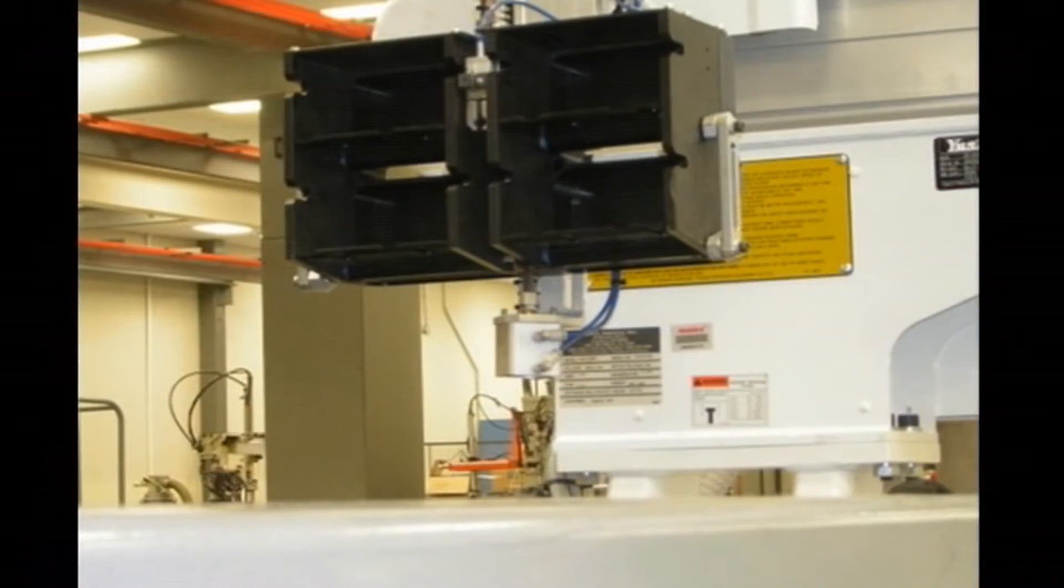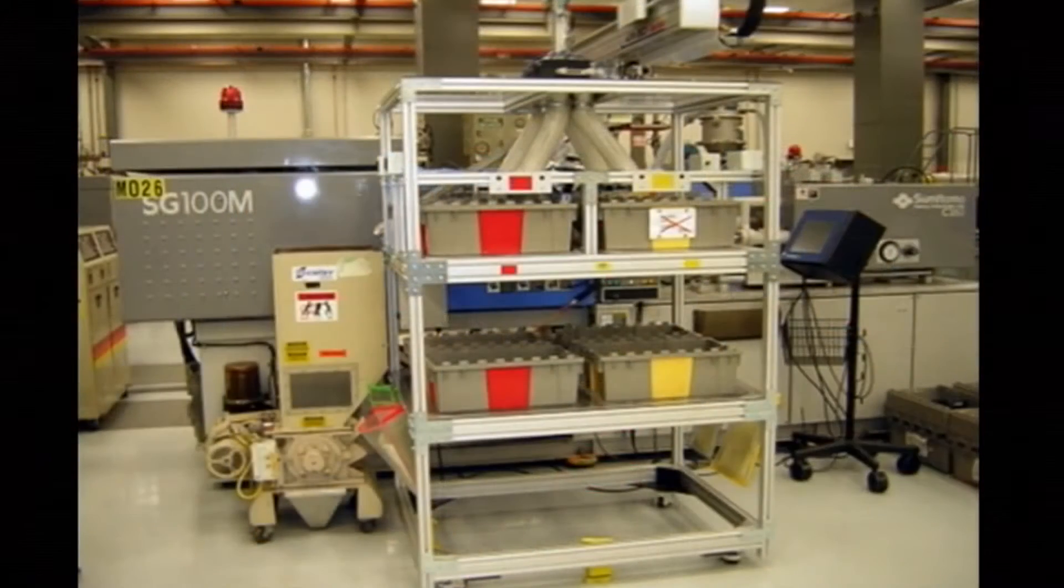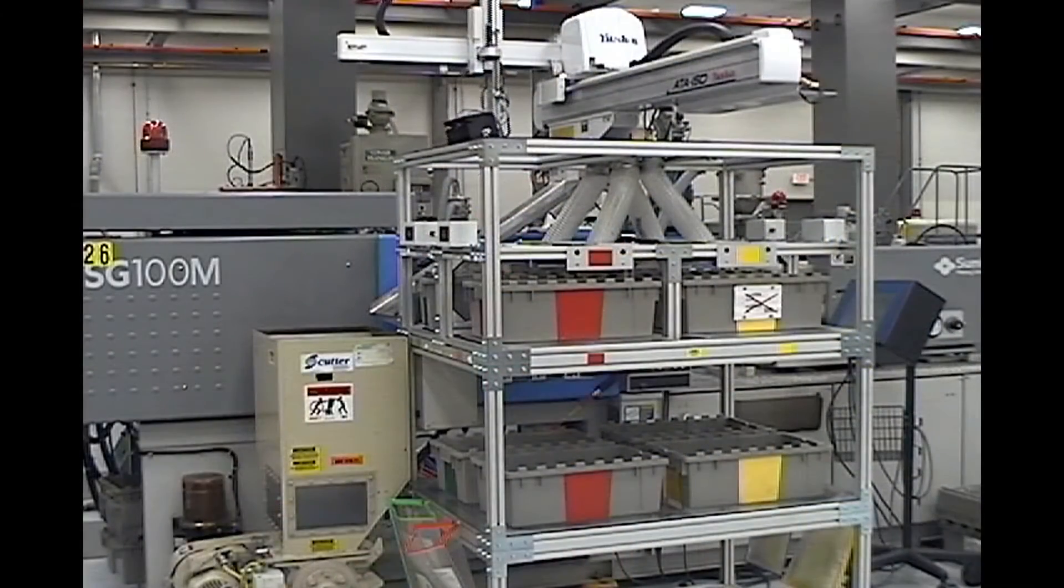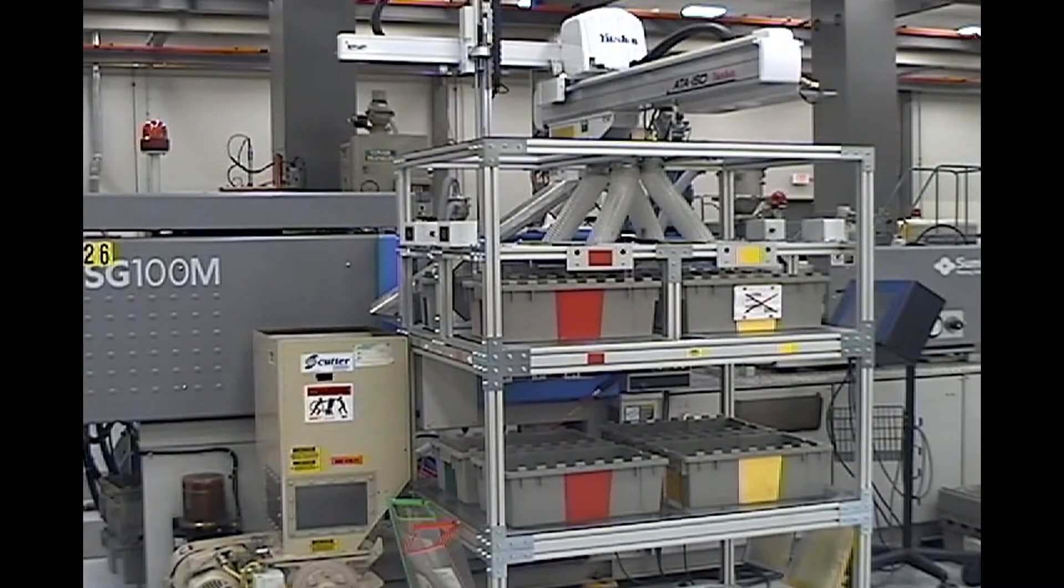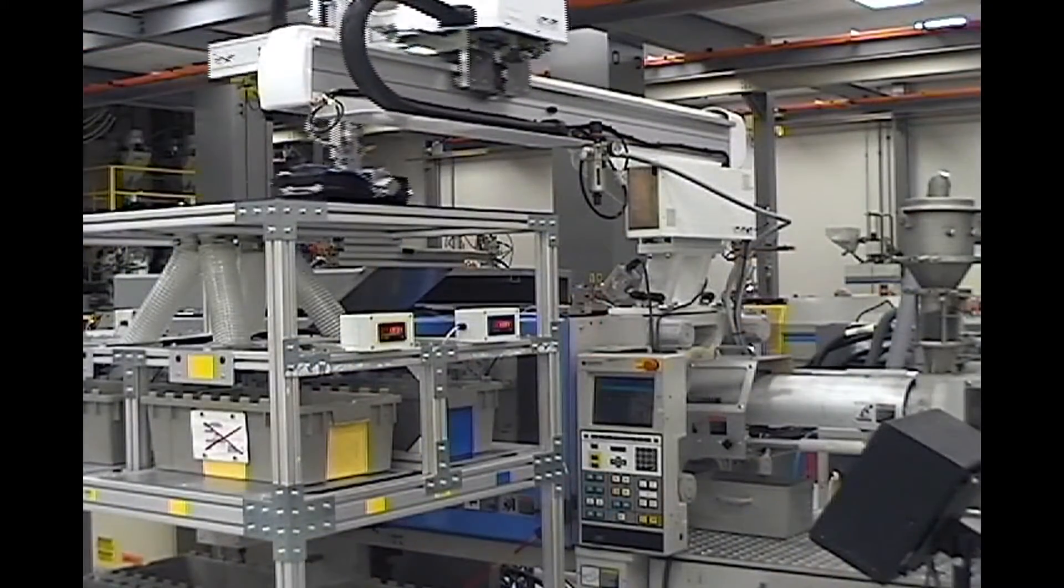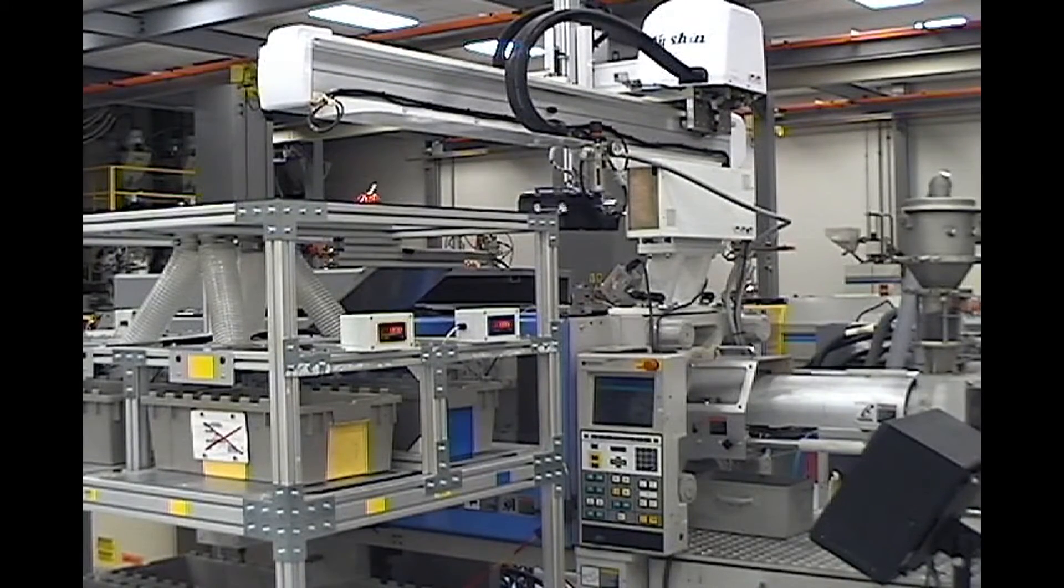The unique design of the end-of-arm tool and distribution tower produces savings in cycle time, labor cost, and material cost. This solution, designed for hard-to-capture parts, is available for your specific application. As with all SAS end-of-arm tools, they will function with any robot manufacturer.